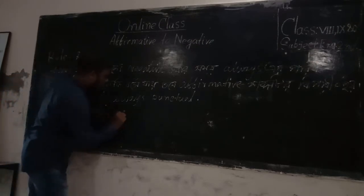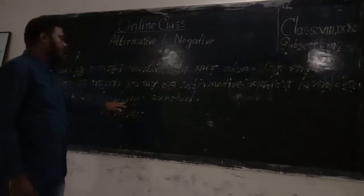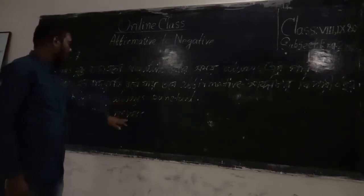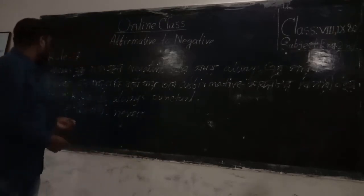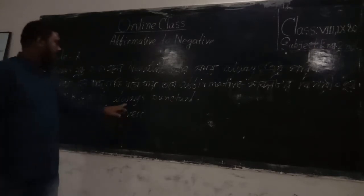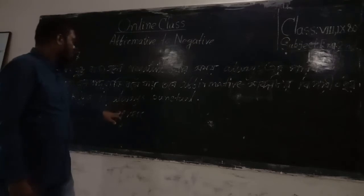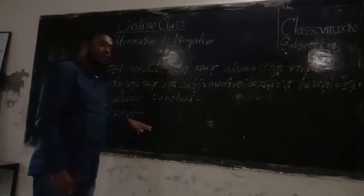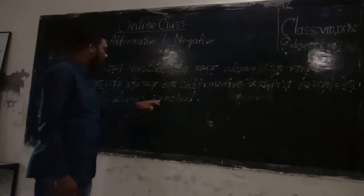...because we found the word 'always' in the sentence, we replace it with 'never.' Then we use the antonym of the affirmative word. So the complete answer uses 'never' and the antonym of the original adjective.